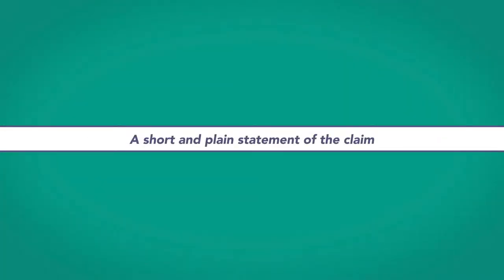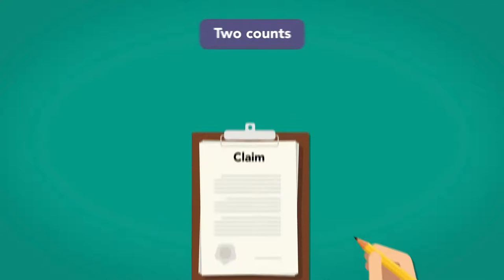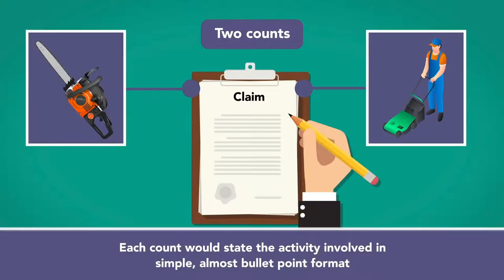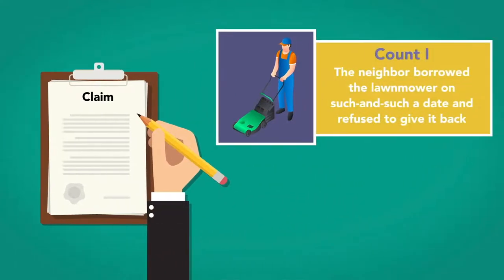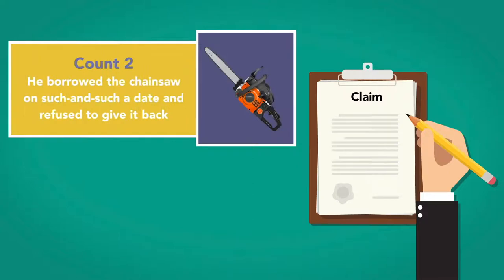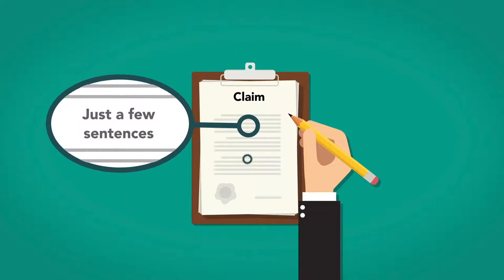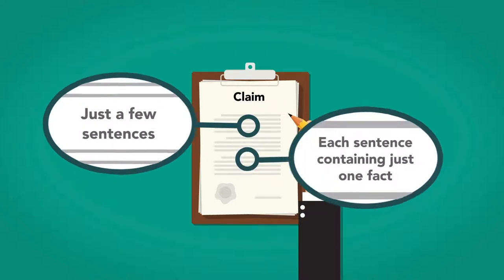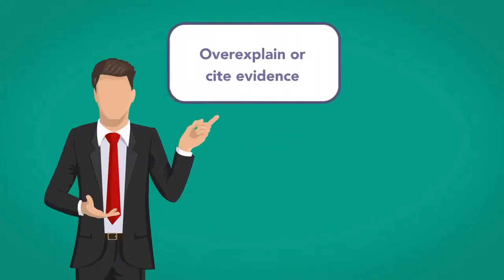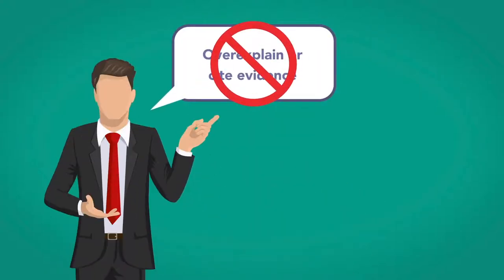A short and plain statement of the claim. This claim would have two counts, one each for the lawnmower and the chainsaw. Each count would state the activity involved in a simple, almost bullet-point format. Count one would be that the neighbor borrowed the lawnmower on such and such a date and refused to give it back. Count two would be that he borrowed the chainsaw on such and such a date and refused to give it back. Each count would consist of just a few sentences, each sentence containing just one fact. Each stated fact is a separate allegation. And that's about it — you do not need to over-explain or cite evidence when laying out claims.